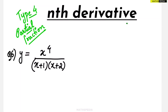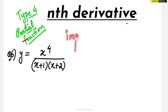In this video we are taking up the sixth problem — partial fraction method, type 4 questions. Carefully observe the power in the numerator: the degree of the numerator is 4, but the degree of the denominator, if you expand it, the highest power will be 2. This means it is an improper fraction — you have a problem based on an improper fraction.